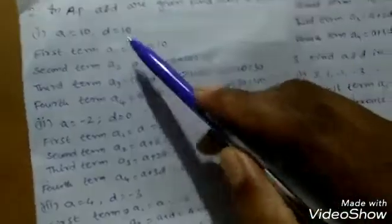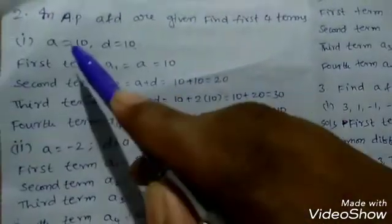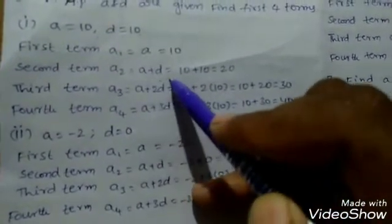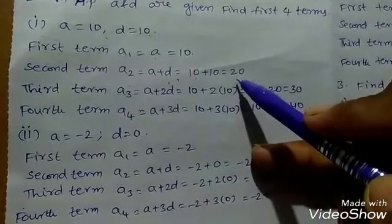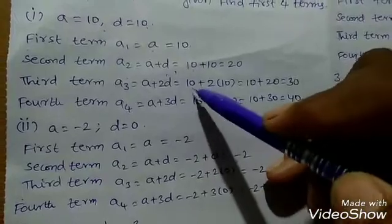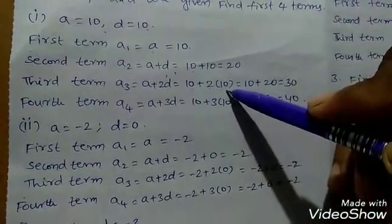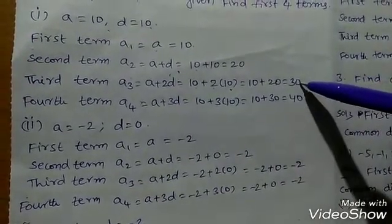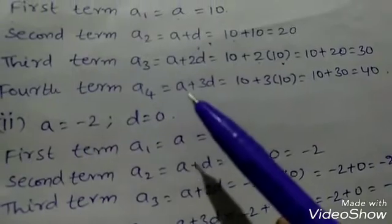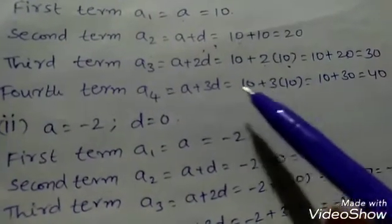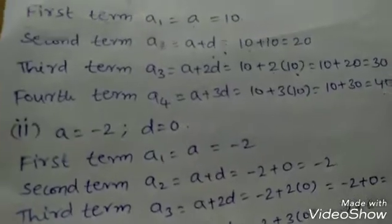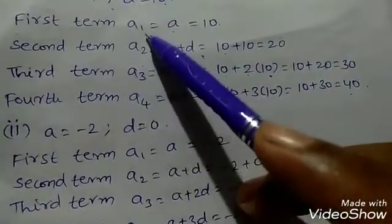First problem: a equals 10, d equals 10. First term a1 equals a, that is 10. Second term a2 equals a plus d, that is 10 plus 10 equals 20. Third term a3 equals a plus 2d, that is 10 plus 20 equals 30. Fourth term a4 equals a plus 3d, that is 10 plus 30 equals 40.